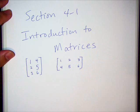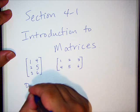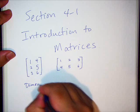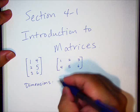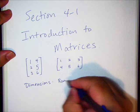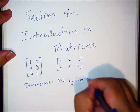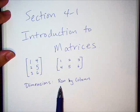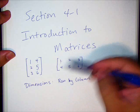First thing is dimensions. A matrix has dimensions, and we say these dimensions by row by column. We describe the dimensions by mentioning the number of rows by the number of columns. Rows go this way, columns go this way.